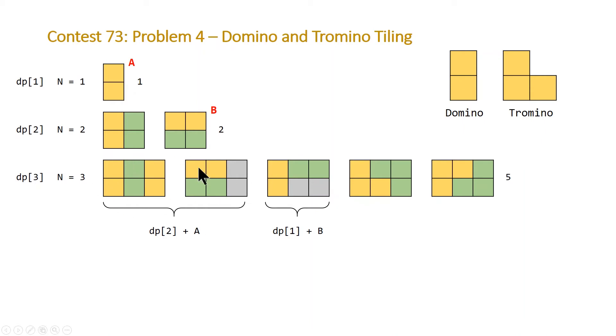So that will give you these two boards. And then DP1, which is just this domino, plus our B. So these two horizontal ones, that's what this is here: one vertical and two horizontal.